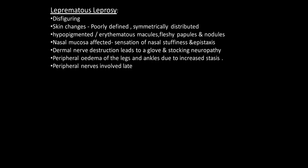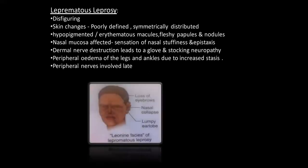Lepromatous leprosy is the most disfiguring — this is the one that gave the alarming and mutilating picture of which people were scared. Skin changes are poorly defined, symmetrically distributed hypopigmented lesions; nasal mucosa affected; stuffiness and epistaxis may be present; dermal nerve destruction leading to glove and stocking neuropathy. Peripheral oedema of the legs and ankles due to increased stasis; peripheral nerve involvement late. Leonine facies like a lion, loss of eyebrows, nasal collapse, lumpy earlobes.